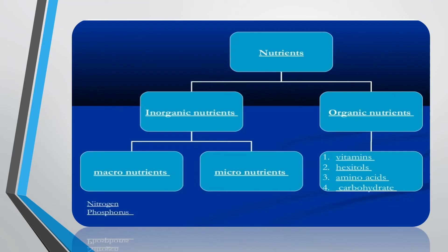Nutrients have two types: inorganic nutrients and organic nutrients. In inorganic nutrients there are two types: macronutrients and micronutrients. In organic nutrients there are four types: vitamins, inositols, amino acids, and carbohydrates. Let us see each in plant tissue culture.